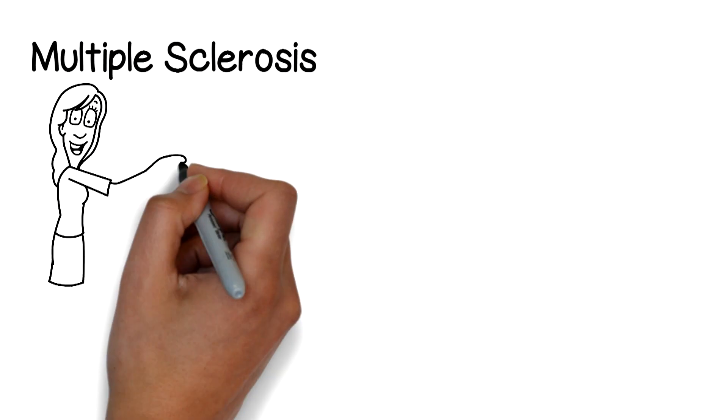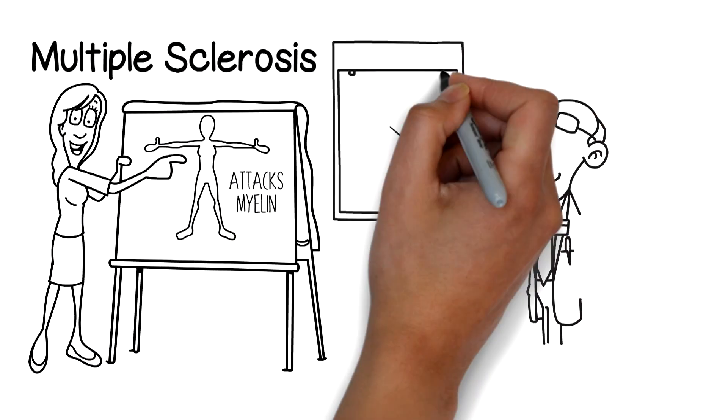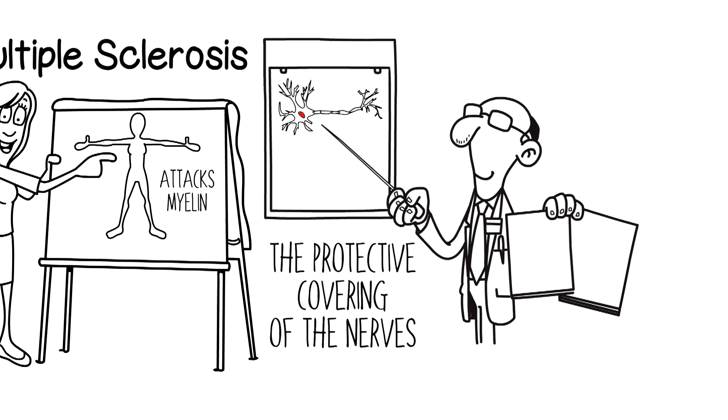Multiple sclerosis is an autoimmune disease where your immune system mistakenly attacks myelin, the protective covering of the nerves.